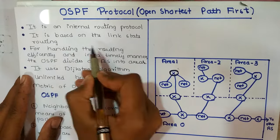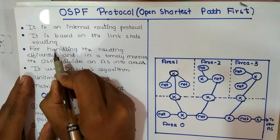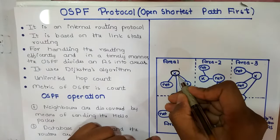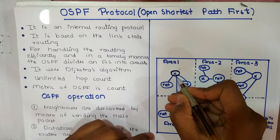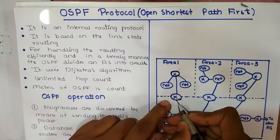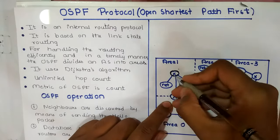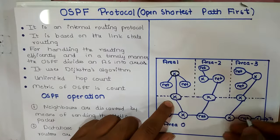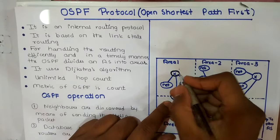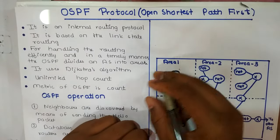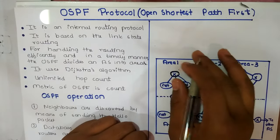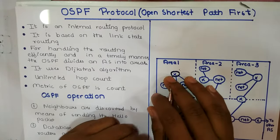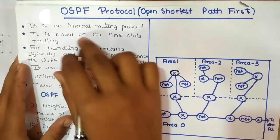OSPF is based on link state routing. In link state routing, a router shares its information with its neighbors. A neighbor then shares its routing information to all other neighbors. In this way, a single router shares information to all other routers in an autonomous system, which is the link state routing.